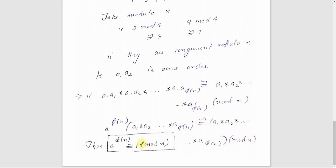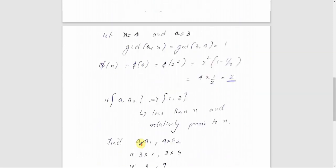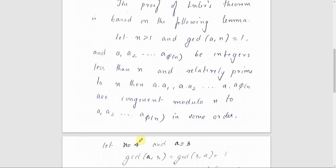So this is Euler's theorem. The proof is based on a key lemma: given n positive and gcd(a,n)=1, we identify the integers a1, a2, ..., a_φ(n) relatively prime to n, generate the series a·a1, a·a2, ..., a·a_φ(n), take modulo n, and show the remainders are the same set a1, a2, ..., a_φ(n) in some order.